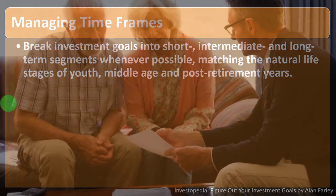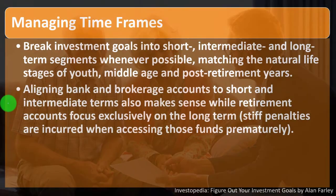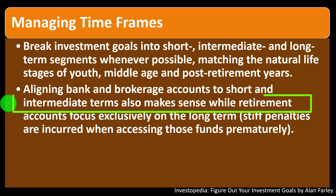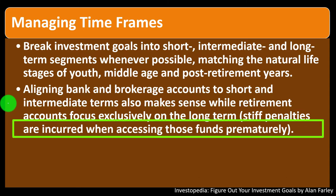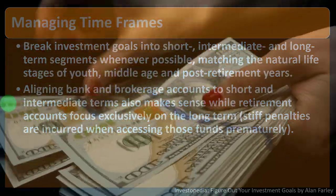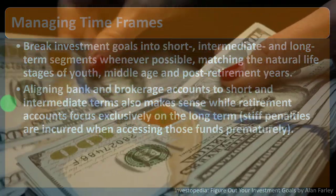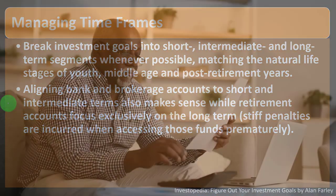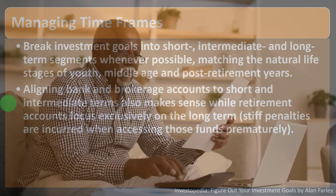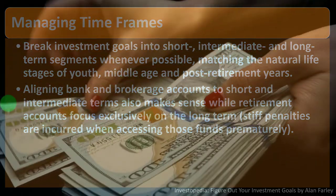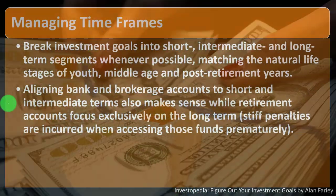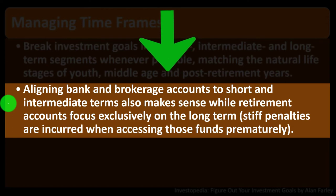Later you're hoping to pay down student loans, pay down the mortgage, and have a set amount of assets. You might break goals into one-year, five-year, ten-year, and retirement categories. Aligning bank and brokerage accounts to short and intermediate terms also makes sense, while retirement accounts focus exclusively on the long term. Stiff penalties are incurred when accessing retirement funds — such as a 401k or IRA — prematurely, though you do get a significant tax deferral.